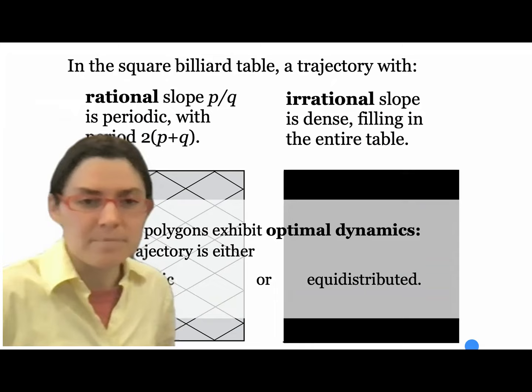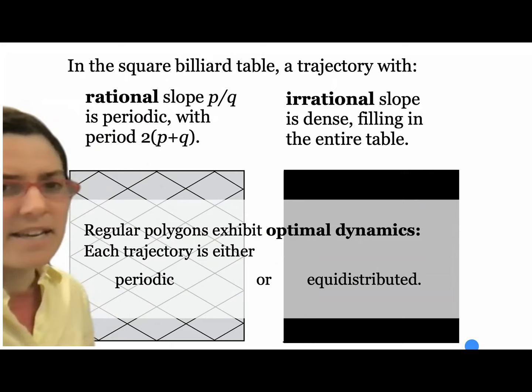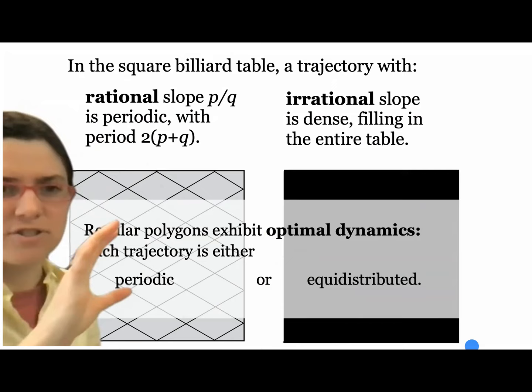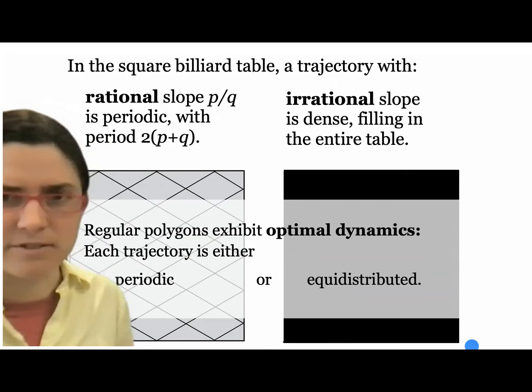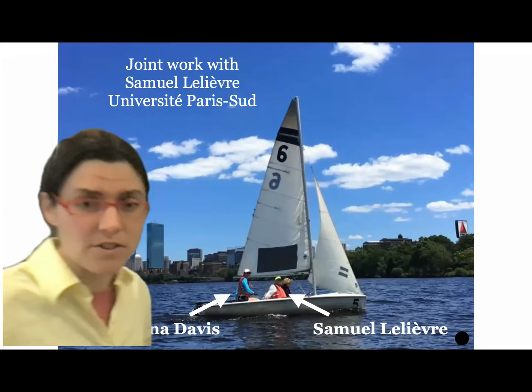One thing to say: regular polygons — the square, the regular pentagon, all regular polygons — exhibit what's called optimal dynamics, or the Veech dichotomy. Each trajectory is either periodic or equidistributed. We can't have something that just fills in one part of the table densely and never meets another part. It's either periodic or equidistributed — a very nice property to have.